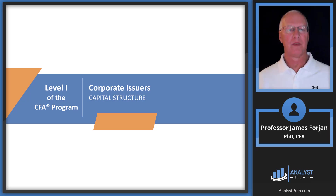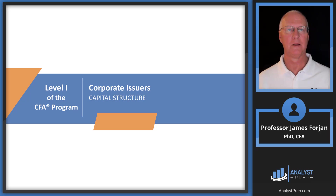This is level one of the CFA program, the topic on corporate issuers, and the reading on capital structure. There are two main decisions made by the executive leadership team. The first one occurs on the left-hand side of the balance sheet, which we've already talked about. This is capital budgeting, which is the process of planning for the purchase of long-term assets.